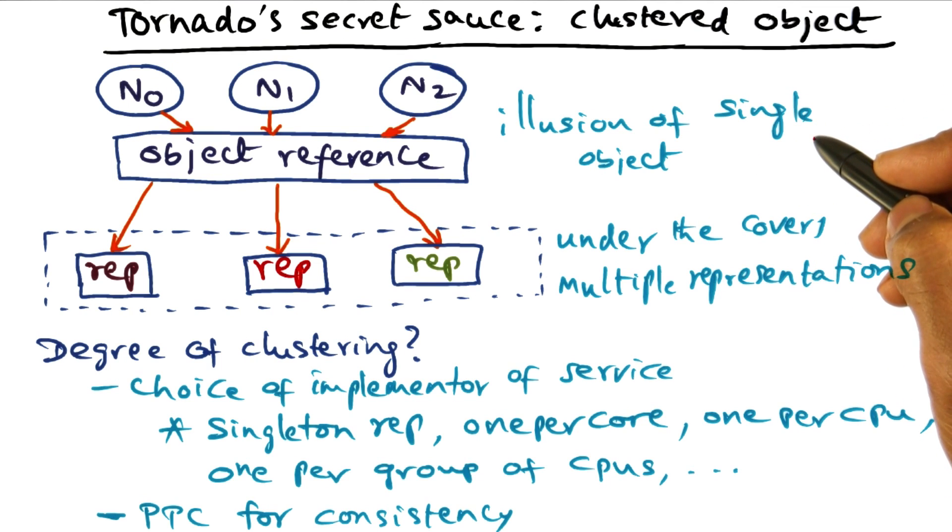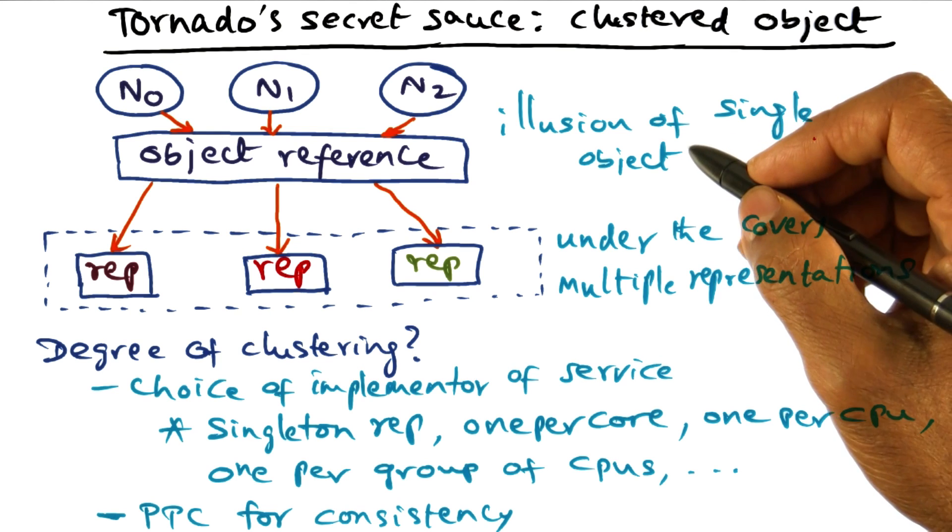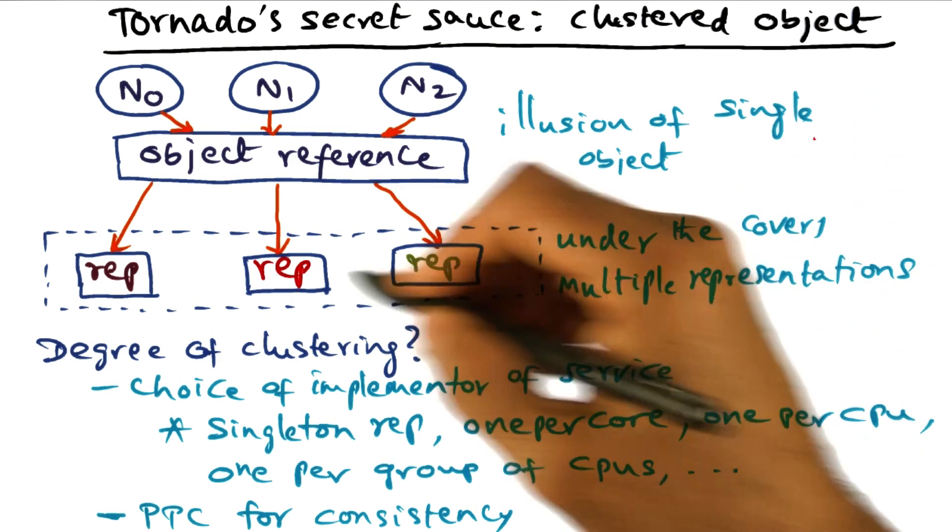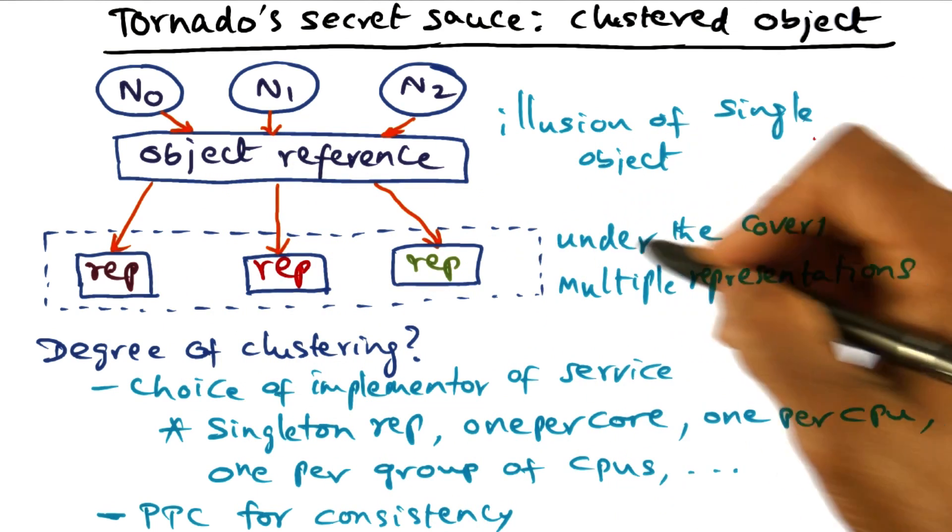So there's an illusion of a single object. That's what I meant when I said logically the operating system designer may think of a shared data structure as logically the same thing, but physically it may be replicated under the covers.